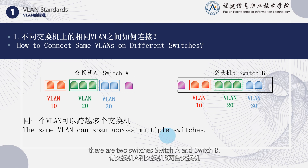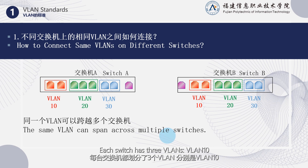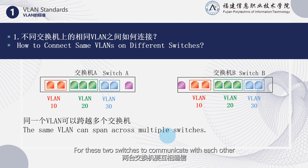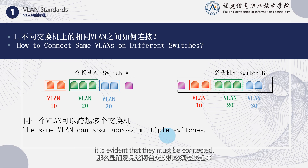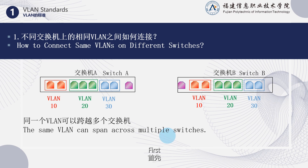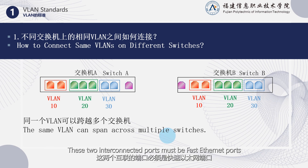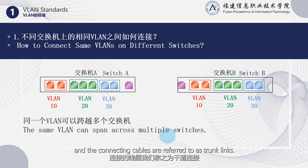In the diagram, there are two switches, switch A and switch B. Each switch has three VLANs: VLAN10, VLAN20, and VLAN30. For these two switches to communicate with each other, they must be connected. Both switch A and switch B must allocate a port as an interconnection port. These two interconnected ports must be fast Ethernet ports, and the connecting cables are referred to as trunk links.